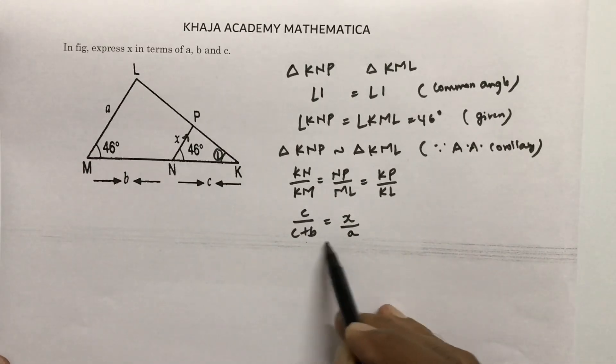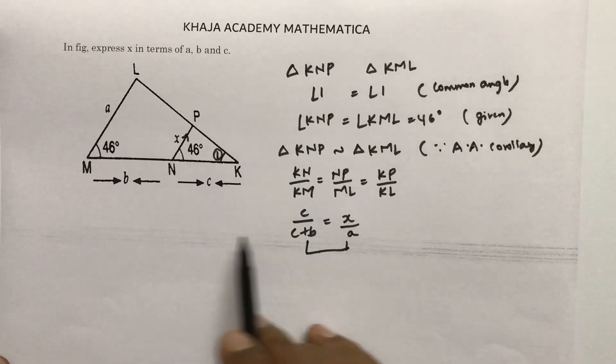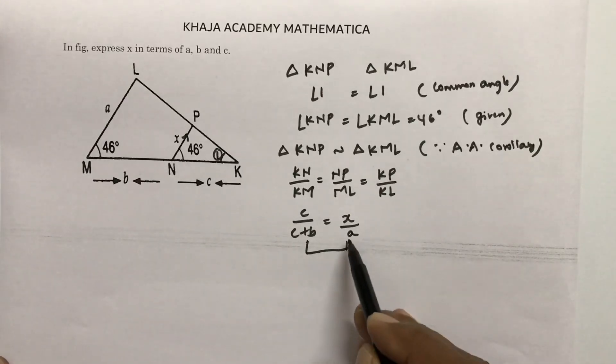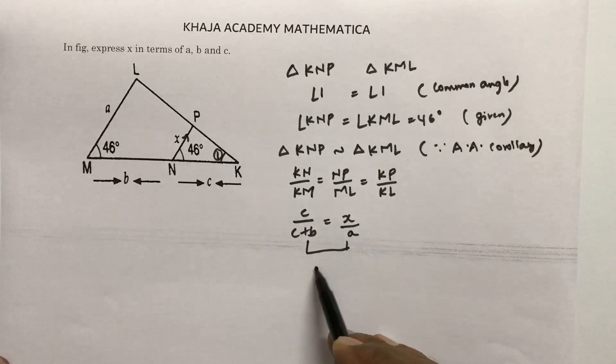Now from this equation, we need to get x in terms of a, b, c. Just cross multiply: a times c divided by b plus c equals x.